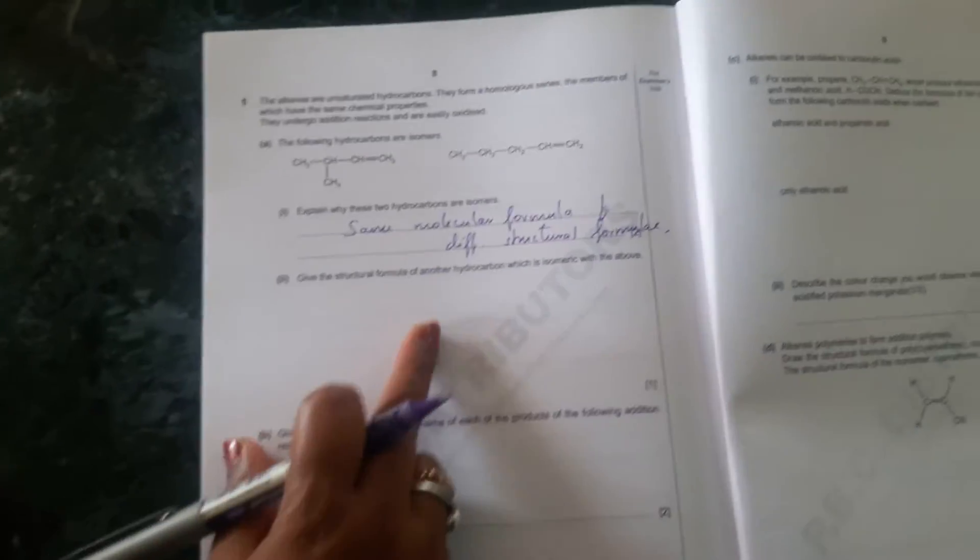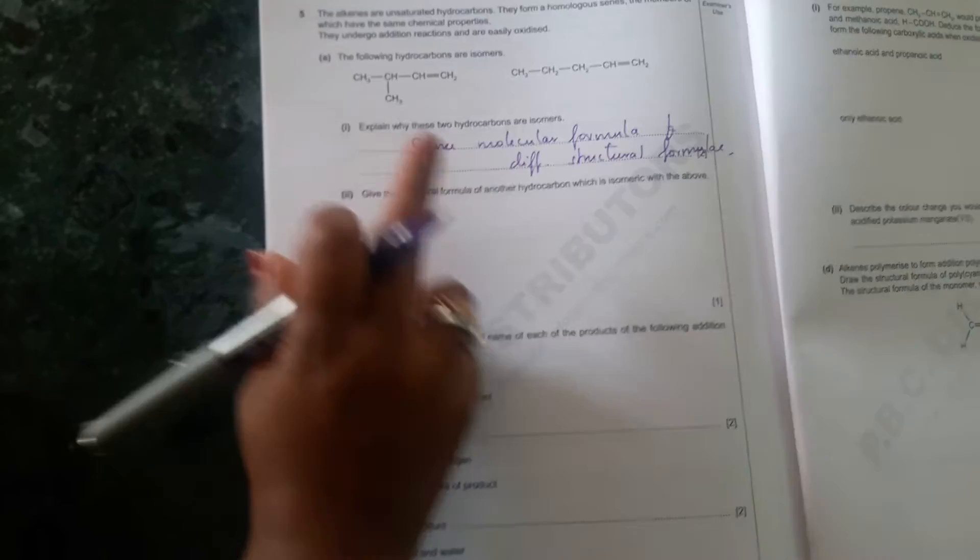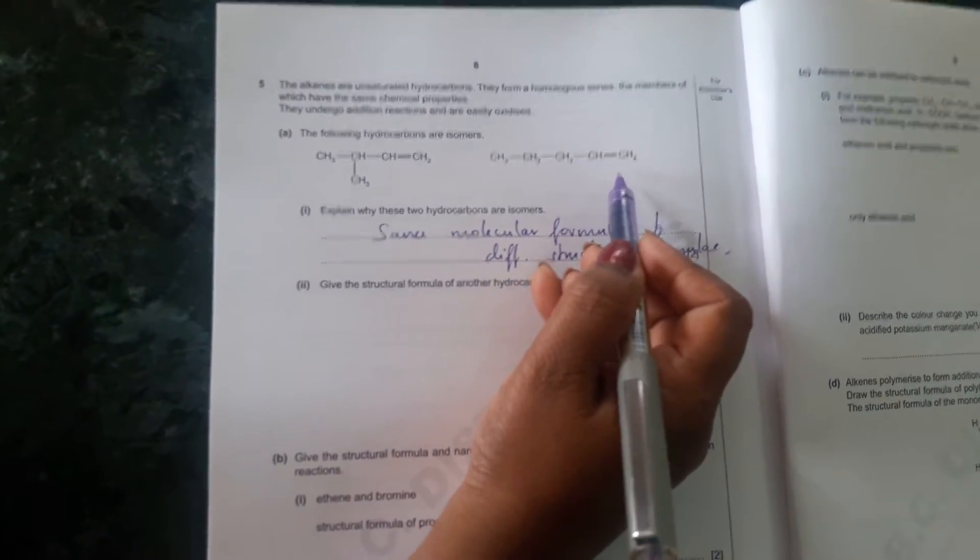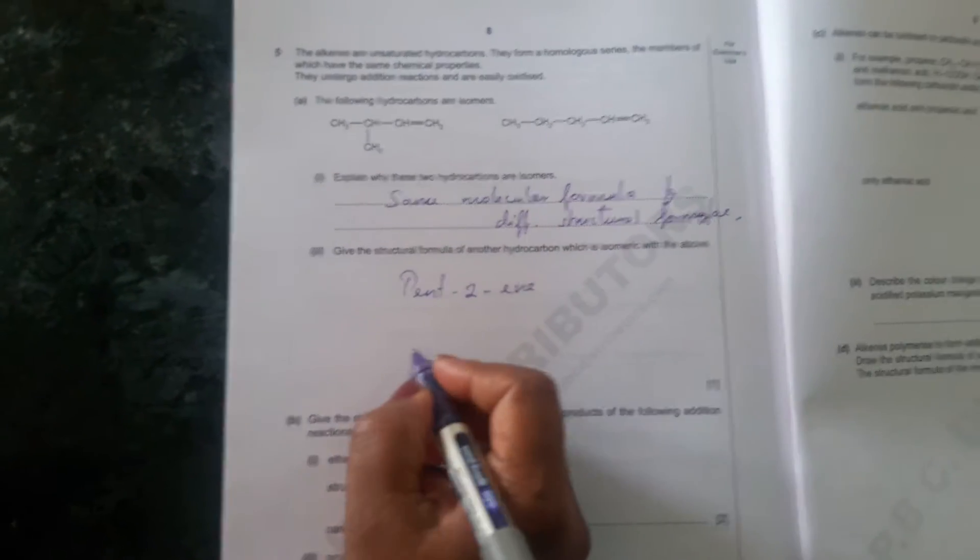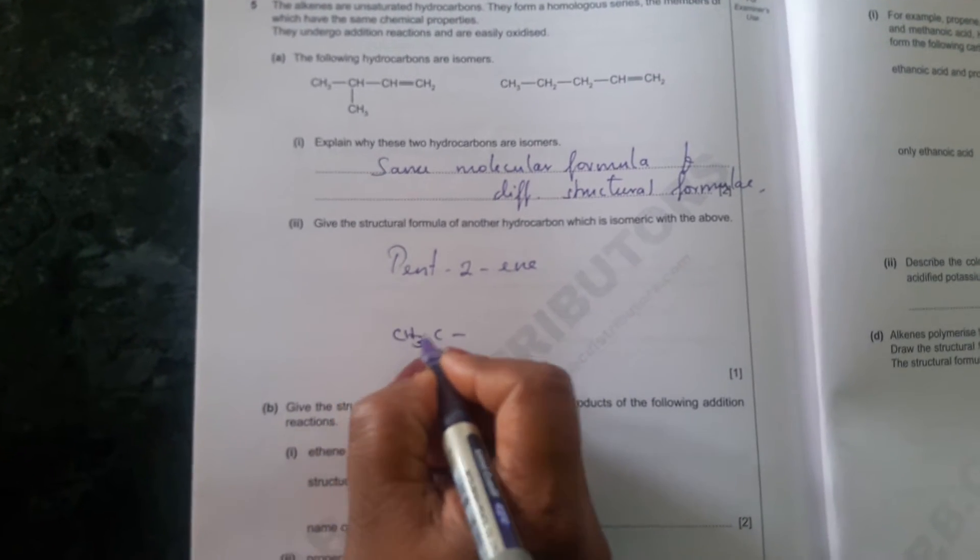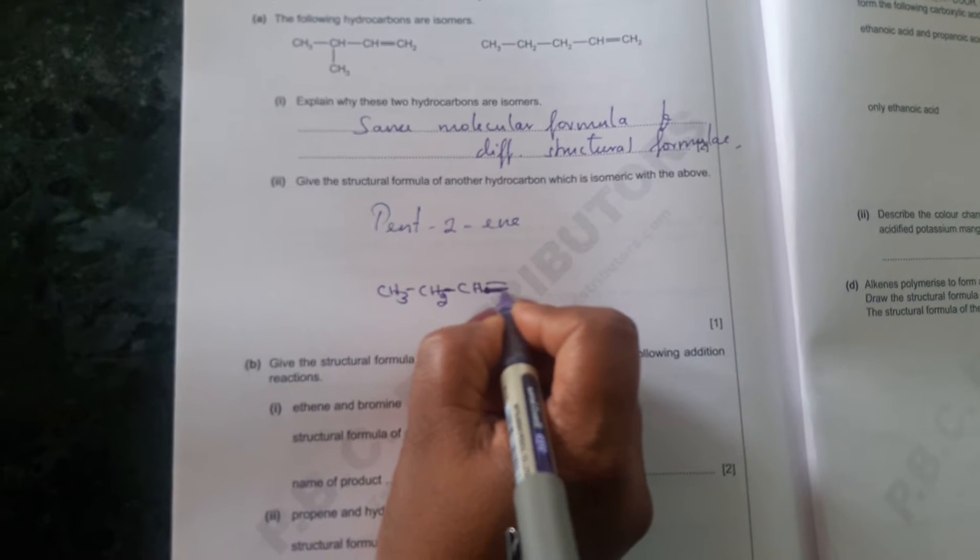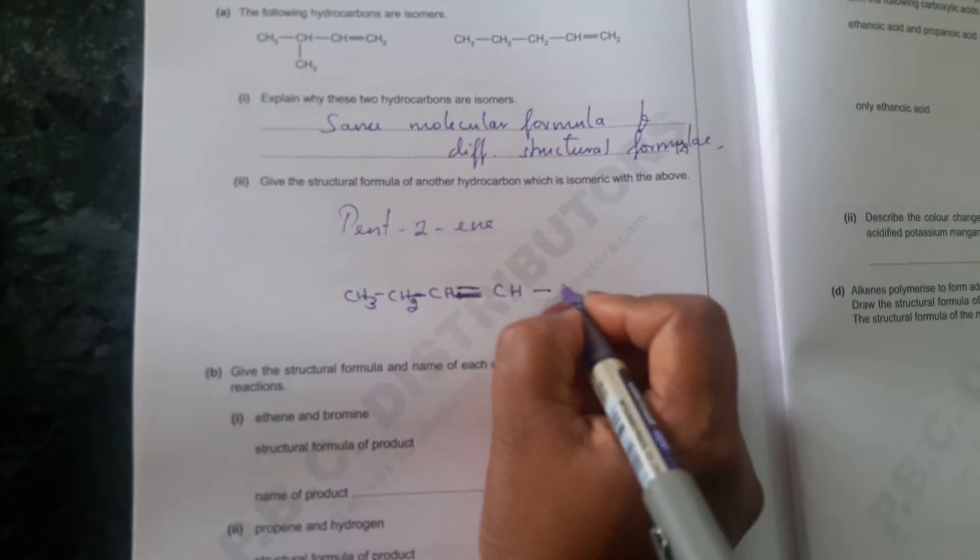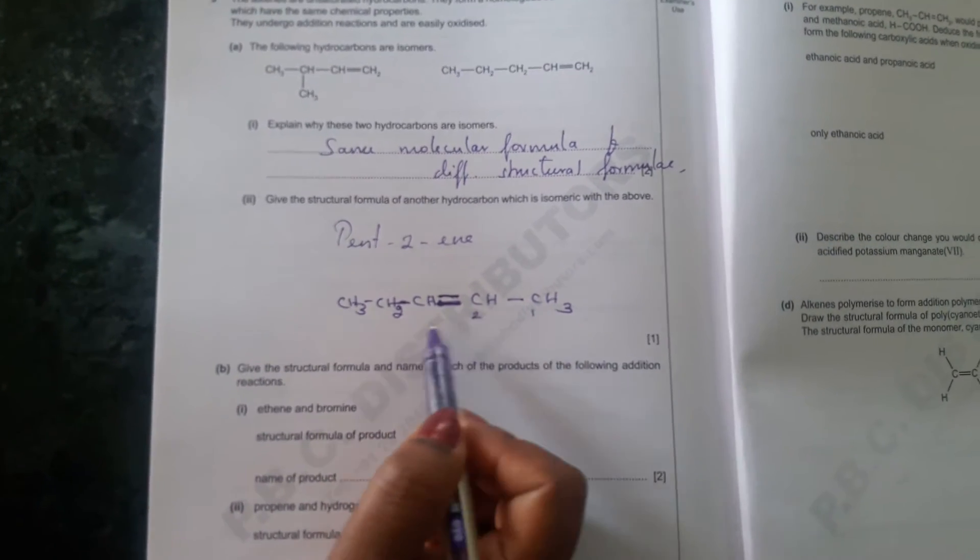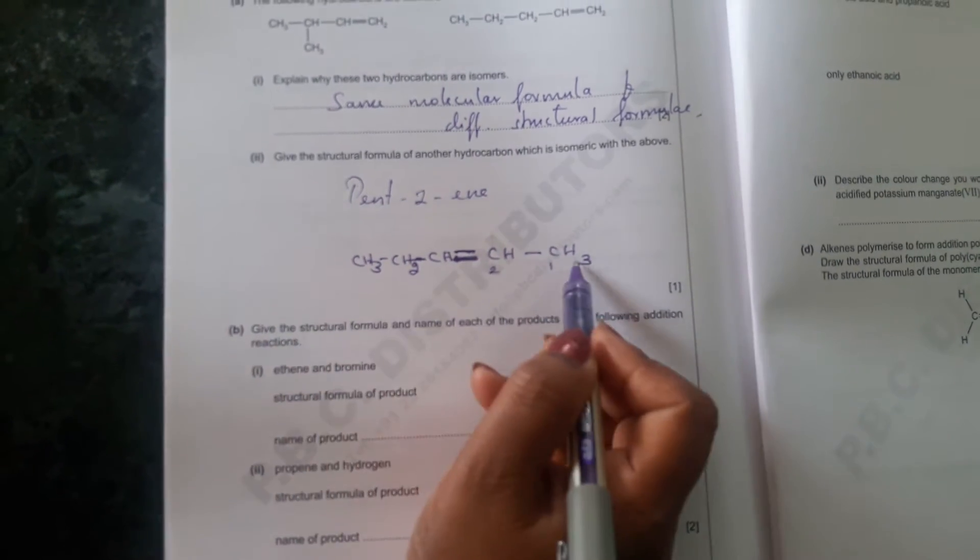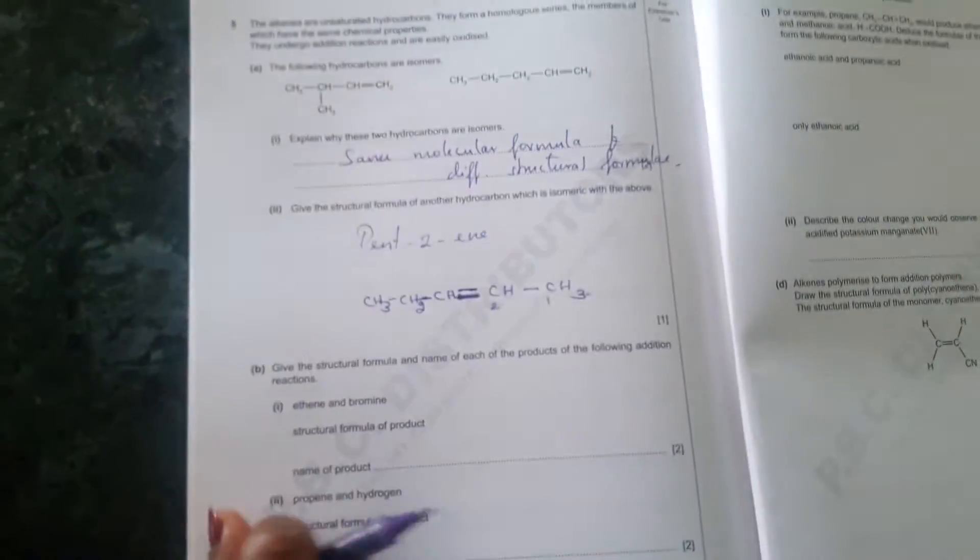So give the structural formulae of another hydrocarbon which is isomeric with the above. So they have given two structures. So one more they are asking. So very well you can write here it is pent-1-ene, so you can write pent-2-ene. So pent-2-ene is like carbon atom with structural formulae they are asking. And CH2, CH2, here double bond comes. Double bond CH, double bond CH, single bond CH3. So the second carbon has double bond over here. So that is why two hydrogen atoms removed. So five carbon atoms and ten hydrogen atoms. So this is an isomer of these hydrocarbons.